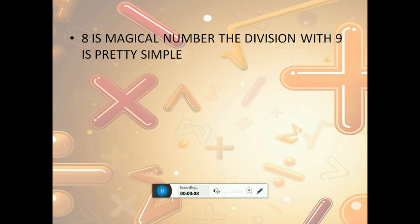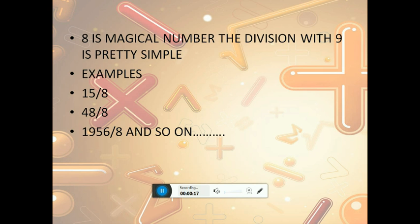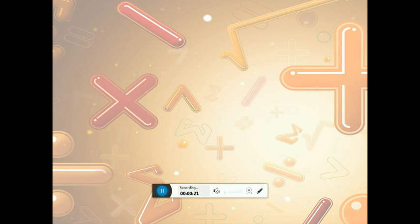8 is also a magical number which divides every number in a very simple way. Some of the examples we can think of: 15 by 8, 48 by 8, 1056 by 8, and so on. Now let's go to the examples to see how we can actually divide.